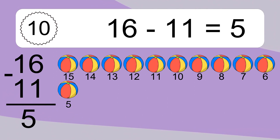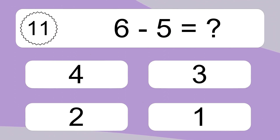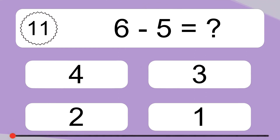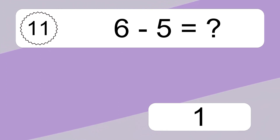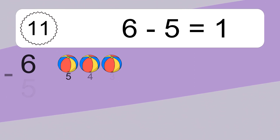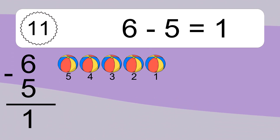6 minus 5 equals what? 6 minus 5 equals 1. Let's count it. 5, 4, 3, 2, 1.